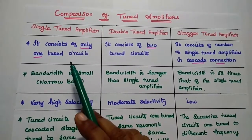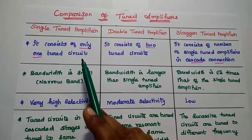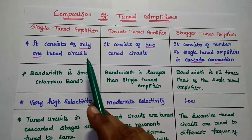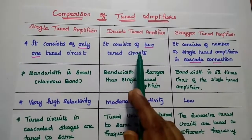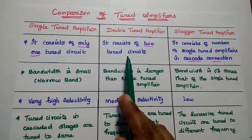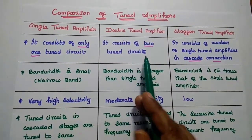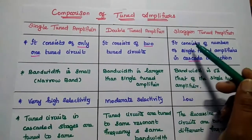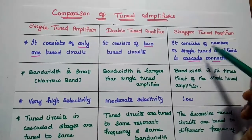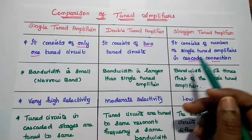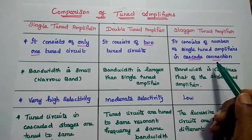Single tuned amplifier consists of only one tuned circuit. Double tuned amplifier consists of two tuned circuits. Stagger tuned amplifier consists of a number of single tuned amplifiers in cascaded connection.